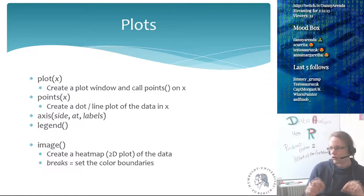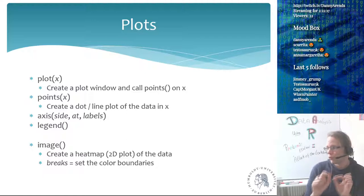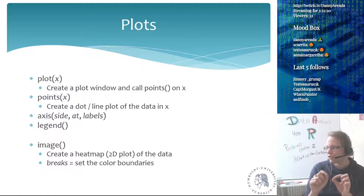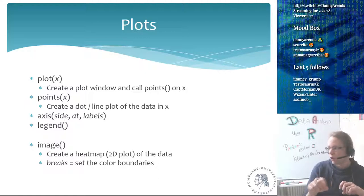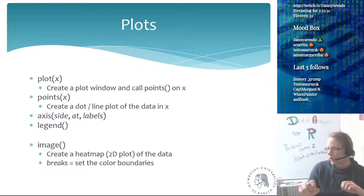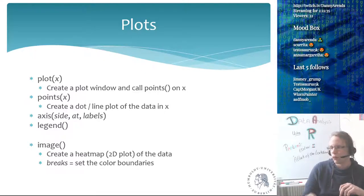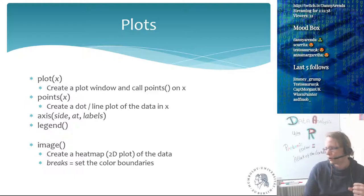There's also the 'at' parameter, which specifies where you want tick marks, and 'labels', which are the labels placed at those positions. For example, you can say axis side is 1, at position 1, and give it a label like 'genotype A' or whatever you want to put there.